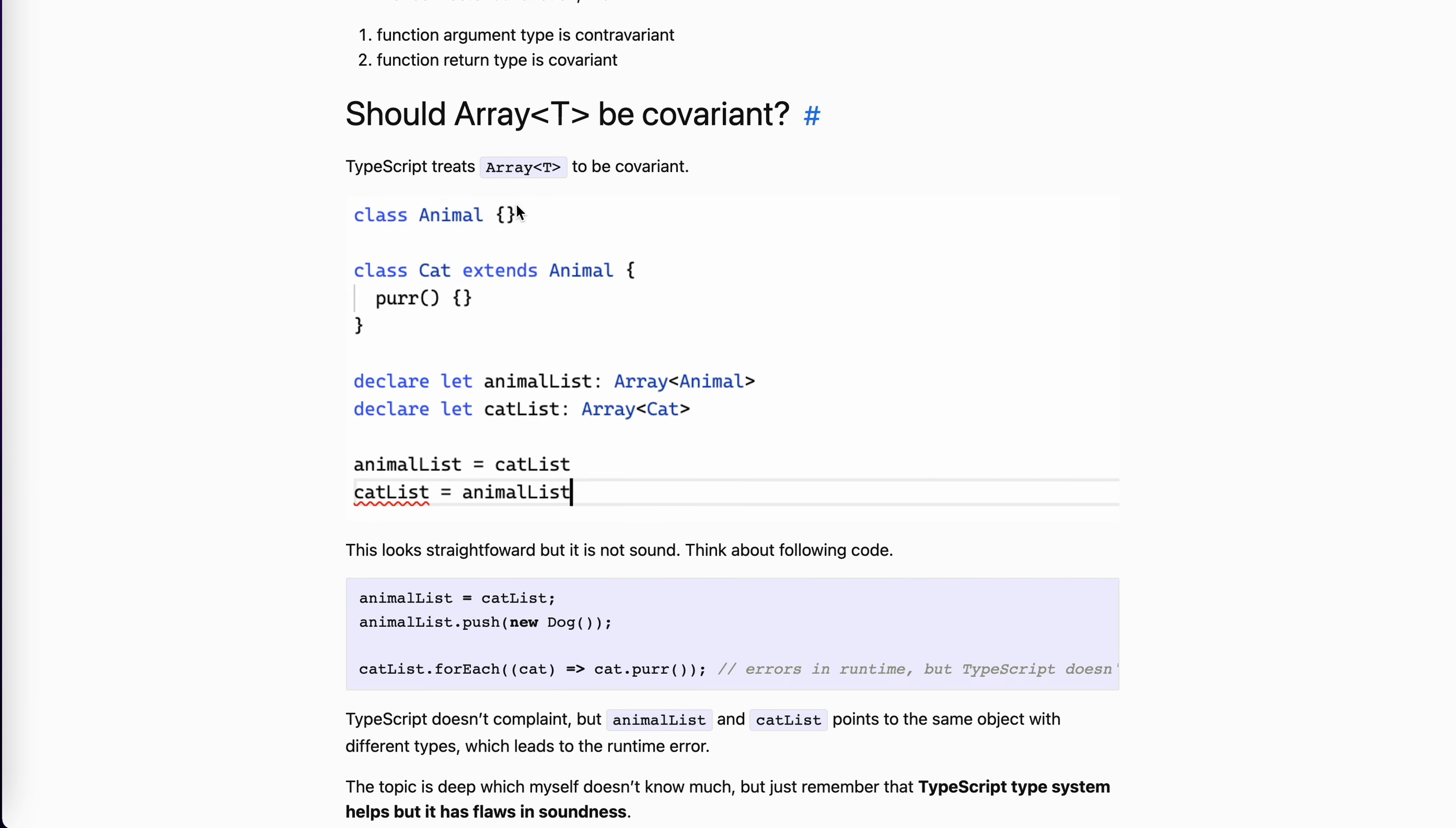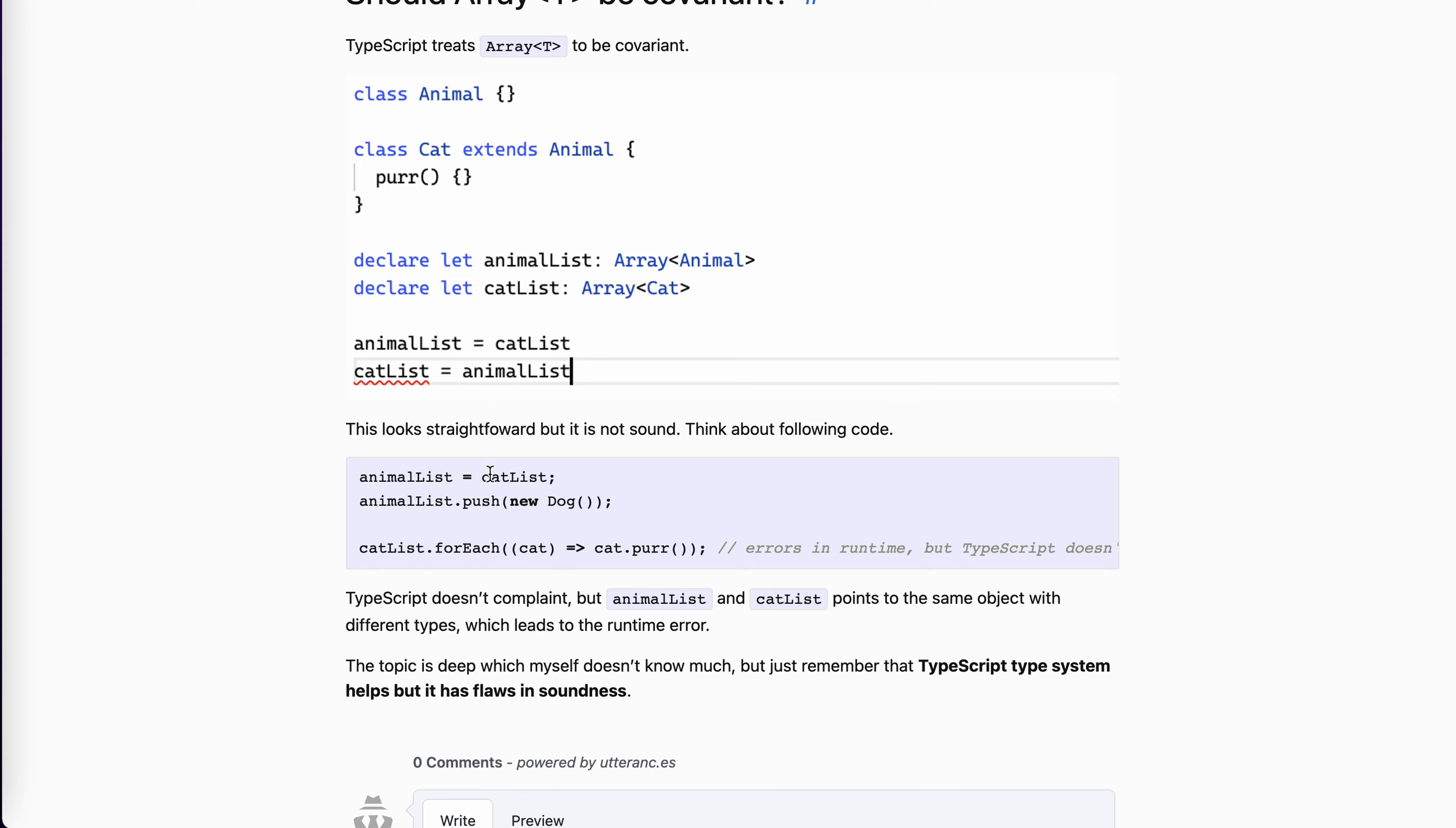Take a look at this example. We assigned catList to animalList. Now the animalList could be pushed with some other animal like dog, right? But the reference to the object itself, the array itself, still there. So the reference catList, in TypeScript it doesn't complain, which is the catList for specific this line. There's no problem because catList, this is a list of cats, right? So this is a problem.